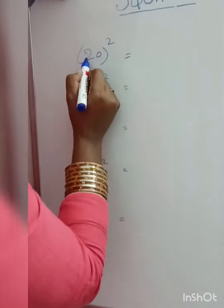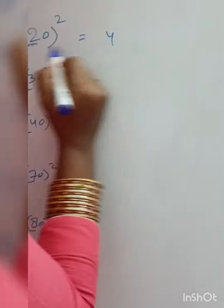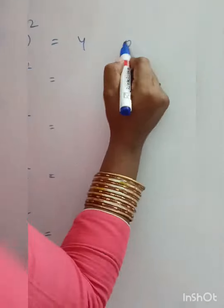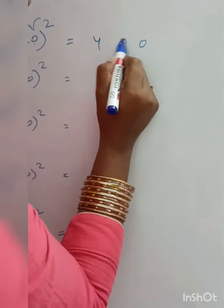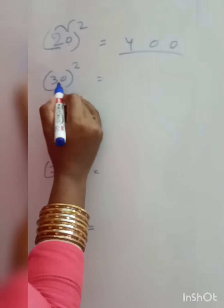This is the same method. 2 times 2 is 4 and 0 squared is 0, and 2 into 0, 0 into 2 is 0. Here it is 400.